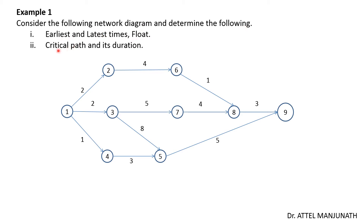We'll take the first example: consider the following network diagram and determine the earliest and latest times, float, the critical path, and its duration. Subsequently we'll take problems where the network is not given; instead it will be given in the form of tables and you'll need to convert the table into a network diagram. But to begin with, we've taken a direct network diagram.